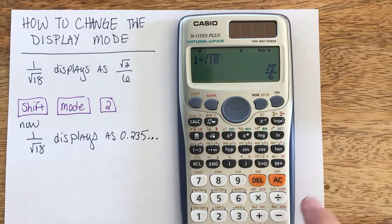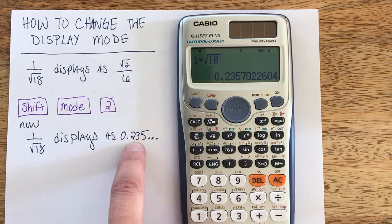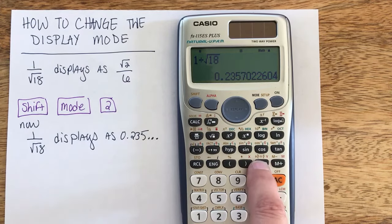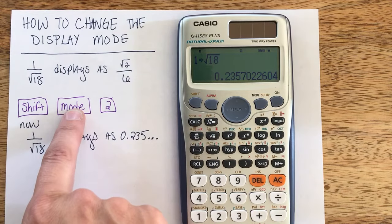you could hit the SD button right above the Dell button to change that into a decimal value, but instead of having to do that every time, what you could do is change the mode that your calculator is in.